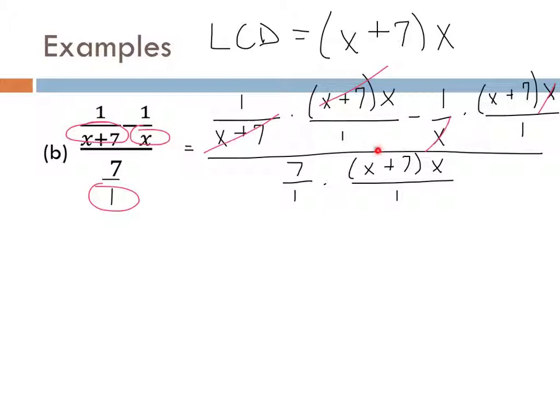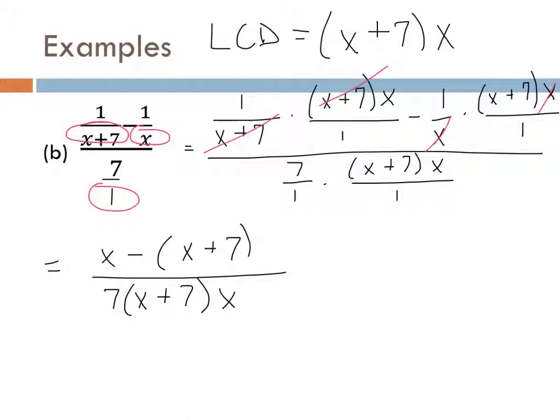Almost done — what else can we do? Can we cancel the A cubed? No — because of the plus between the AB squared and the A cubed on the bottom. If I take the A cubed, I would have to take it with its friend the AB squared, and I don't have one of those on top. Same thing the other way. So I can't cancel the A cubed because of the plus between them. If it were multiplication, definitely — but it's not.